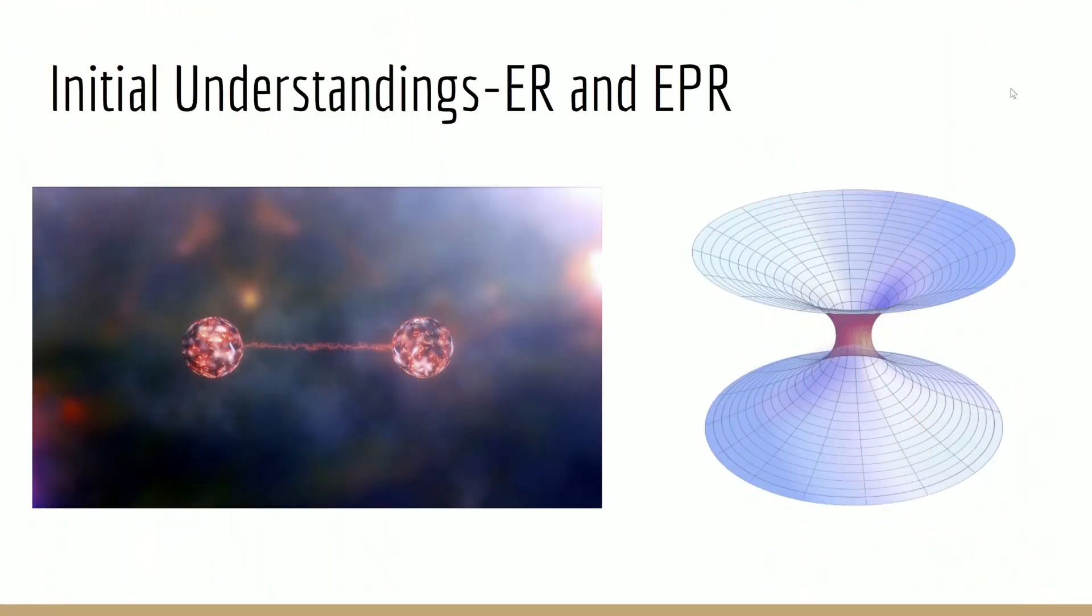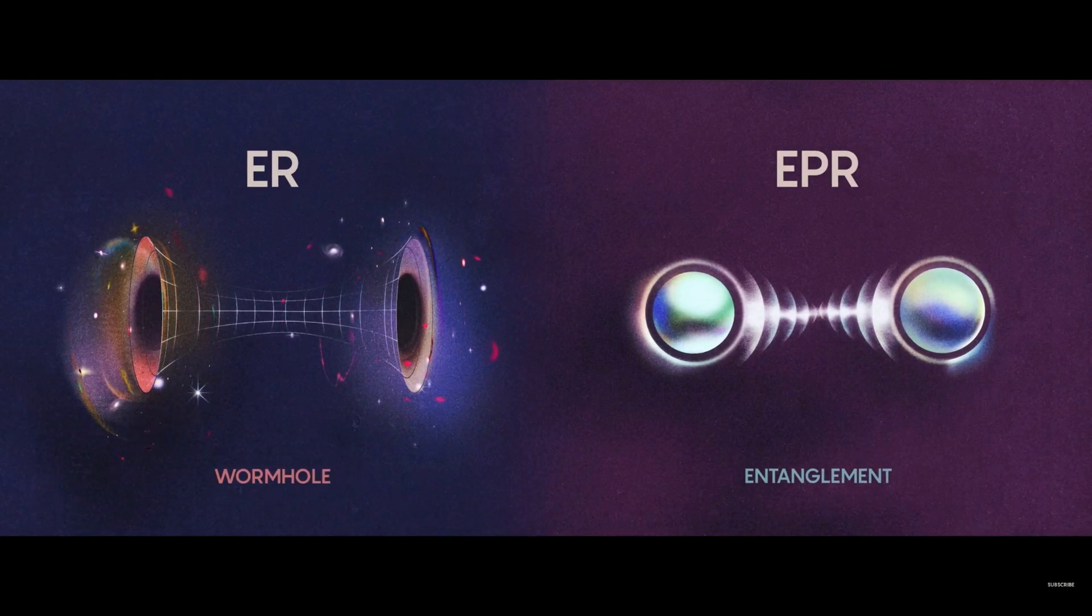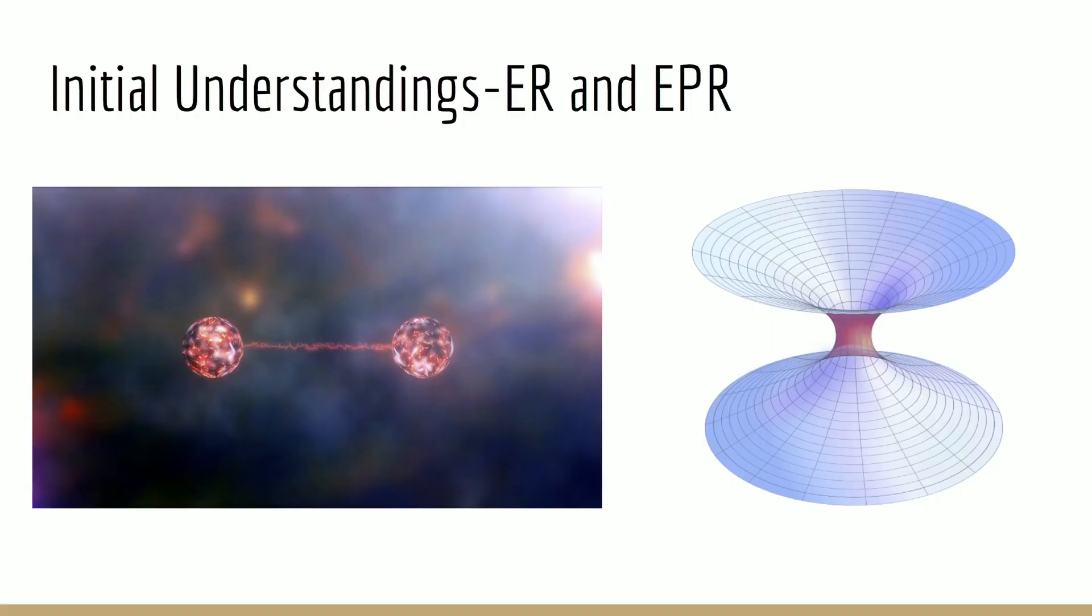The initial understanding behind how a quantum computer may be used to model something like a wormhole comes from this understanding of the relationship between the ER and EPR paradoxes. ER stands for Einstein-Rosen bridges, which are basically just what we know of as wormholes, and EPR stands for the Einstein-Podolsky-Rosen paradox, which has to do with entangled particles and quantum mechanics.